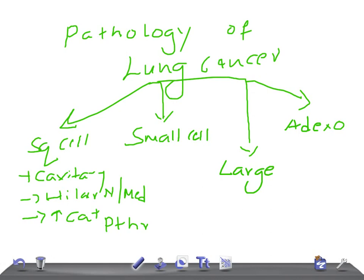Now let's talk about small cell carcinoma. They are also centrally located. These small cell cancers are very rapidly growing and metastasize to very important organs: liver, adrenals, brain, and bone. In a USMLE examination, if they give a history of multiple systems being affected — seizures, syncope, adrenal issues causing decreased blood pressure, or bone pain — think small cell carcinoma.